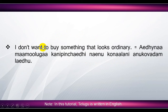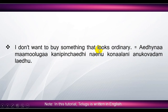'I don't want to buy something that looks ordinary' means 'eadayna, maamuluga kanipianchedhi, nenu konaalani anukko vadam leedhu'. Here, 'I' means 'nenu', 'I don't want to buy' means 'nenu konaalani anukko vadam leedhu'. 'Something' means 'yedayna', 'looks' means 'kanipianchedhi', 'ordinary' means 'maamuluga'. 'Something that looks ordinary' means 'yedayna maamuluga kanipianchedhi'.